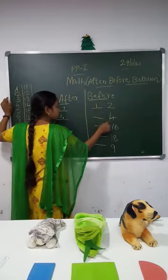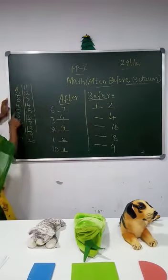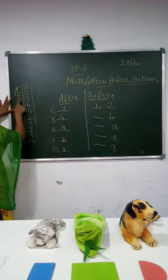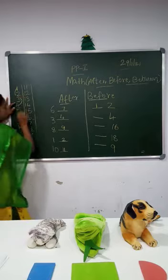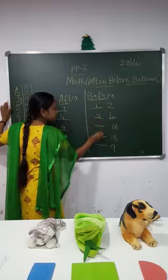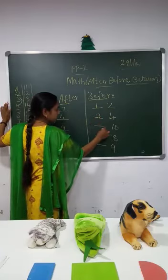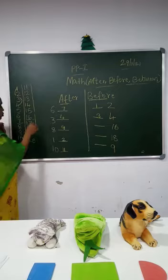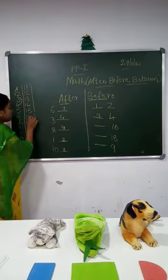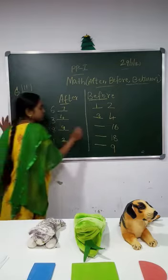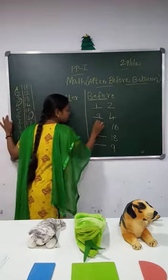Dash four — before four you get three. Before four is three. Dash sixteen — before sixteen, what you will get? Before sixteen you get number fifteen.